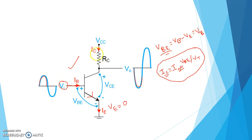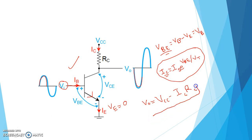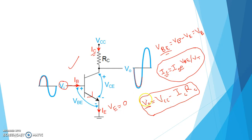So as VI increases, the collector current flowing through the collector resistor RC will increase. The expression for output voltage is: V_output equals VCC minus IC times RC. From this equation, if IC or collector current increases, then V_output will decrease. So if VI increases, the base voltage increases, collector current increases, and as a result V_output decreases.